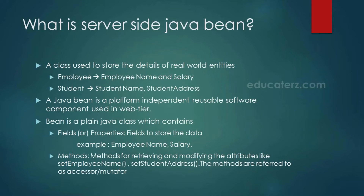Basically, what is a server-side Java Bean? A Java Bean is nothing but a class used to store the details of real-world entities. It is a platform-independent, reusable software component used in the web tier. For example, a class Employee would have details like employee name and salary, and a class Student would have details like student name and address. A Bean is a POJO — plain old Java object — which contains fields to store data and methods for retrieving and modifying attributes like setEmployeeName or setStudentAddress. These methods are referred to as accessor or mutator methods.